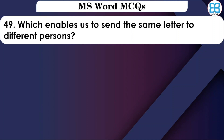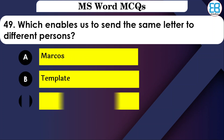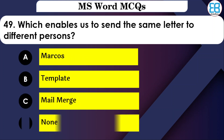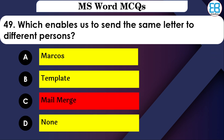Which feature enables us to send the same letter to different persons? The options are: Macros, Template, or Mail Merge. The correct option is Mail Merge — Mail Merge is used to send the same letter to multiple people.